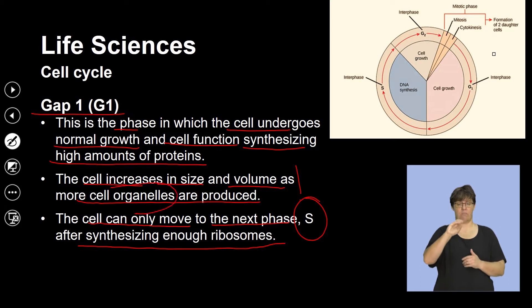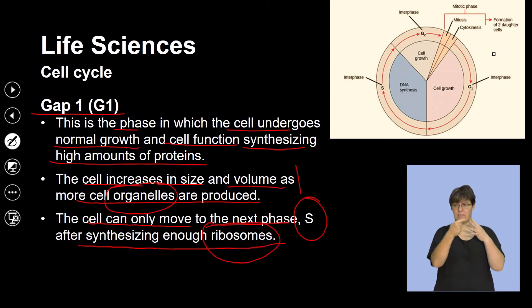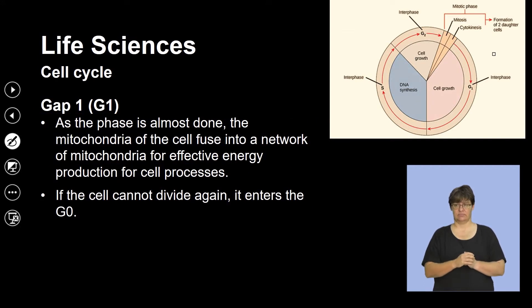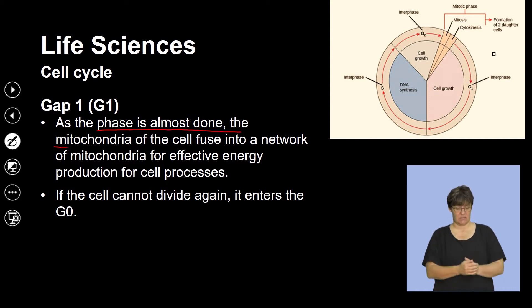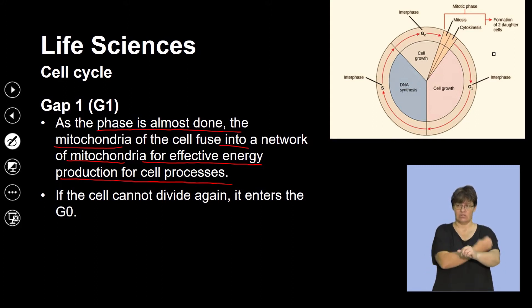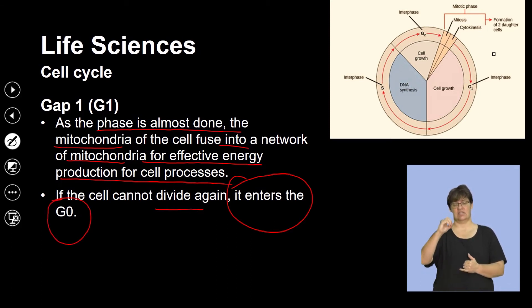The cell can only move to the next phase — the S phase — after synthesizing enough ribosomes. It would have produced organelles including mitochondria and ribosomes, and is now prepared for the next phase of synthesis. As the G1 phase is almost done, the mitochondria of the cell fuse into a network for effective energy production. If the cell cannot divide any further, it undergoes a G0 phase, which is essentially the end of that cell cycle.